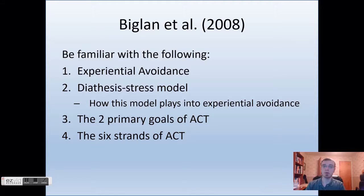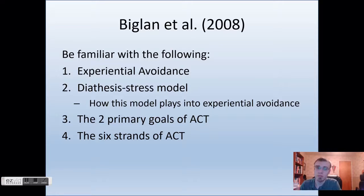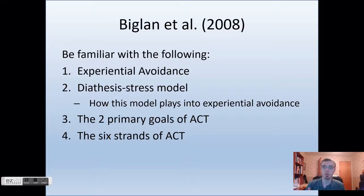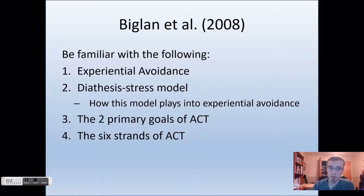I'm not going to go into super detail about the Biglan article itself, but what's important to keep in mind when you're reading — and it may be on the exam — is the concept of experiential avoidance. Also, there's a section that talks about the diathesis-stress model, which is also a very important concept. Really delve into understanding how those two things interact with each other. Keep the two primary goals of ACT in mind, and when reading the Biglan article, focus on defining specifically the six strands of ACT. Cognitive defusion, which I covered in this lecture, is one of those strands.